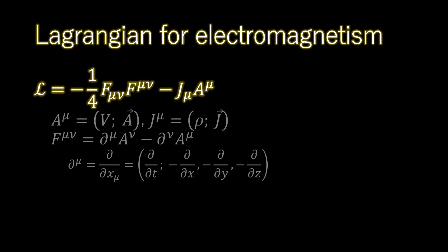For electrodynamics, that is the conventional vector J dot vector A interaction Hamiltonian which becomes J mu A mu relativistically. The interaction Lagrangian specifies the forces.